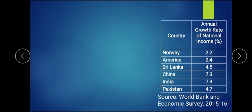Now let us understand with the help of a data table taken from the World Bank and Economic Survey of 2015-16. It shows different countries and their annual growth rate of national income in percentage. Norway has a 2.2% growth rate, America has 2.4%, Sri Lanka has 4.5%, China has 7.3%, India has 7.3%, and Pakistan has 4.7% as per the 2015-16 survey.